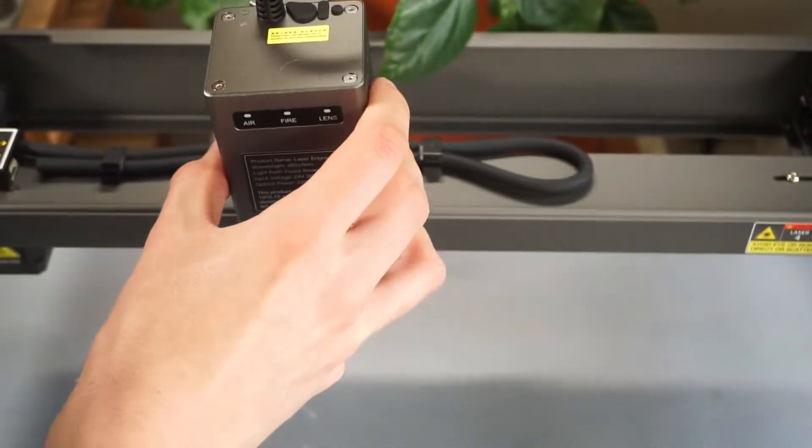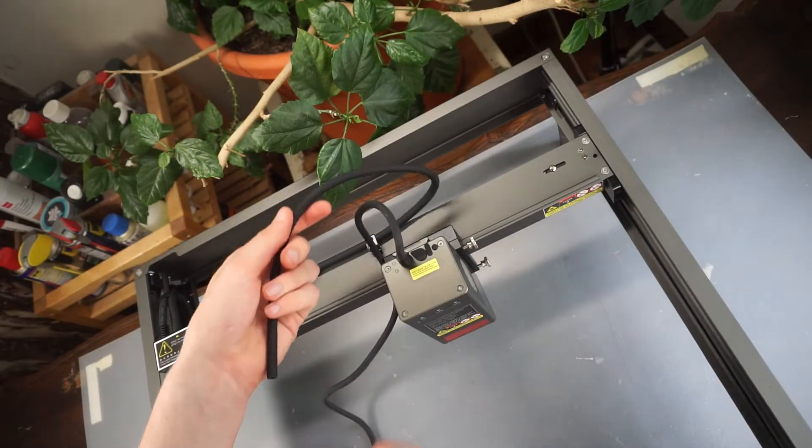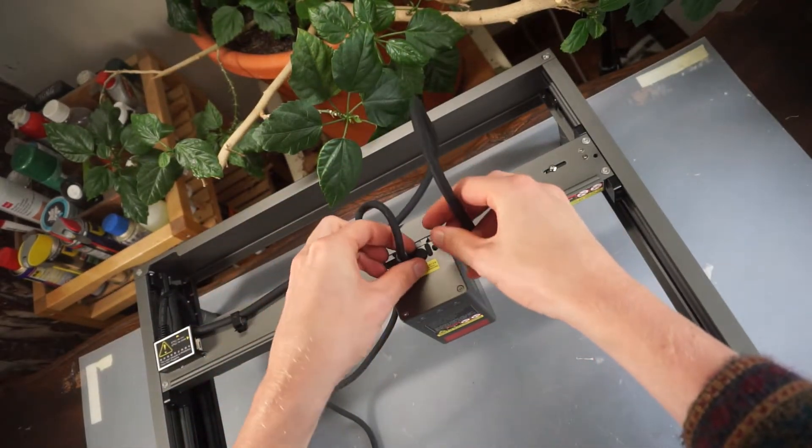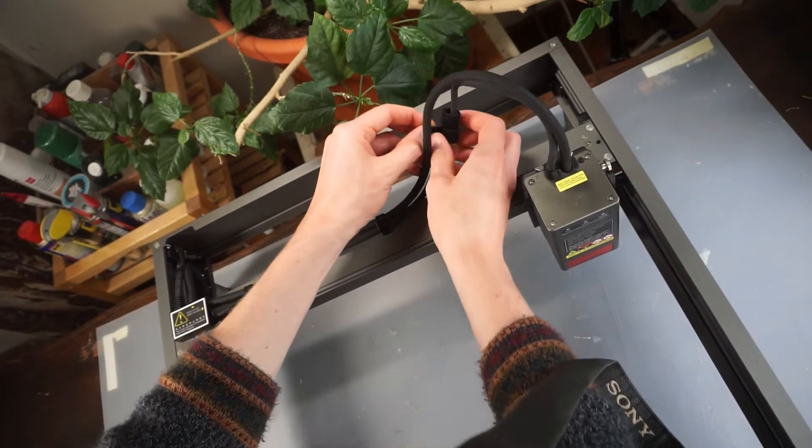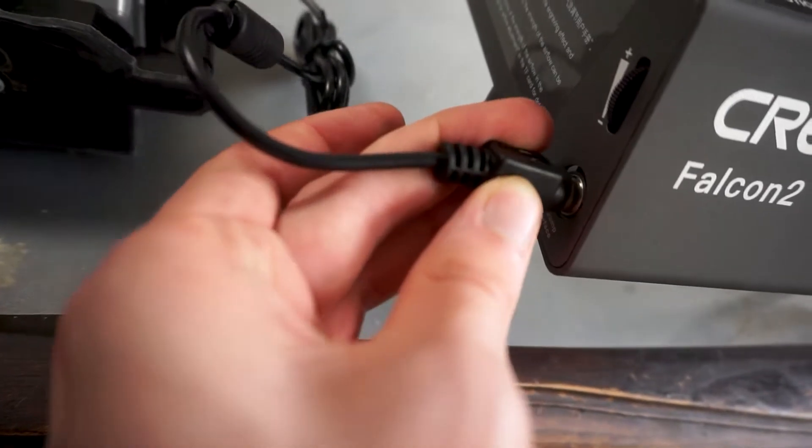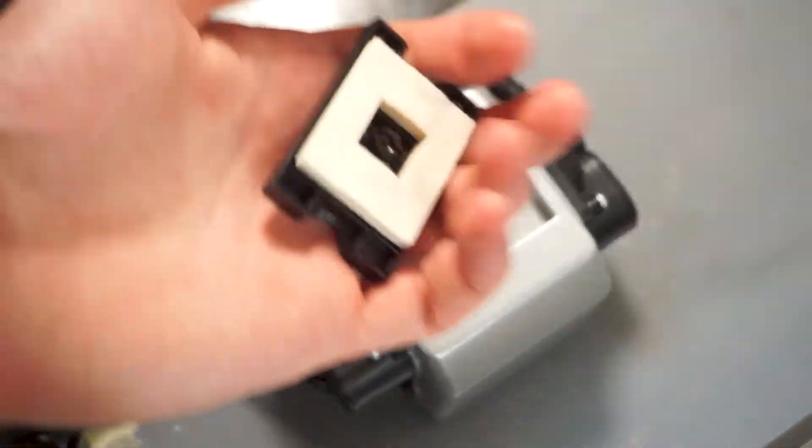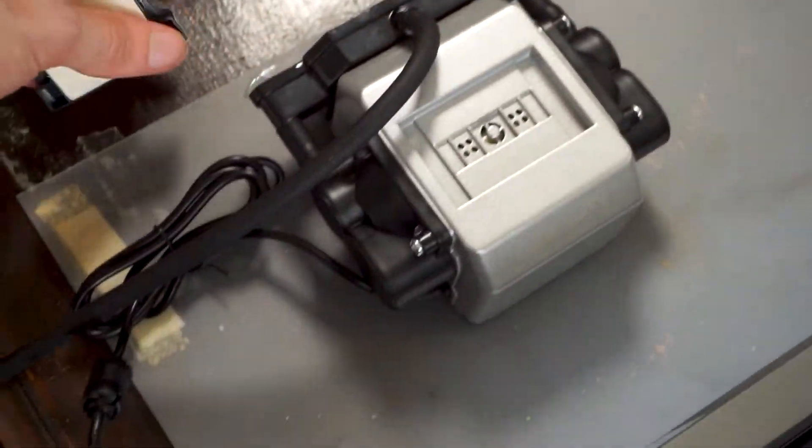Now the laser head has to be installed with these 2 screws, and to connect it to the air pump, the cable management is already designed for us. The air pump also has a small filter which prevents dust from being sent toward the machine.